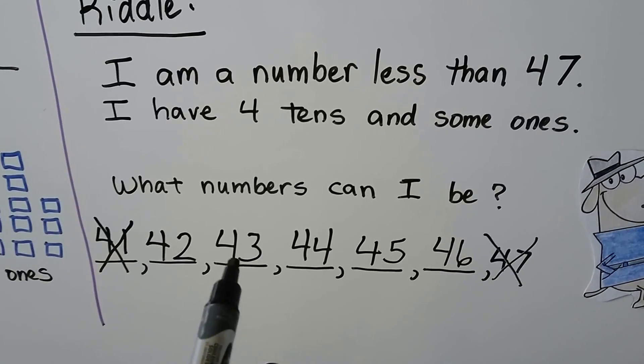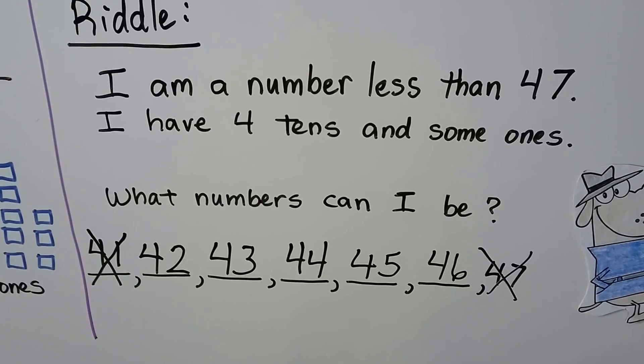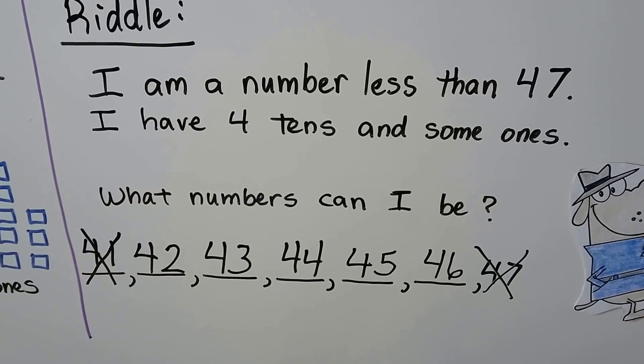It could be 42, 43, 44, 45, or 46. Those numbers are all less than 47, and they have four tens and some ones.